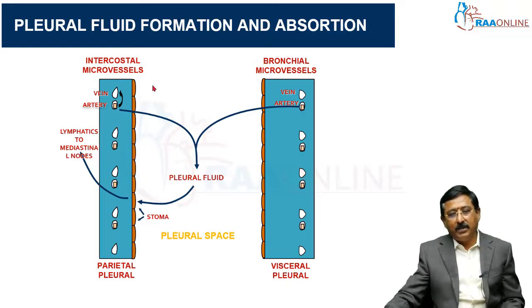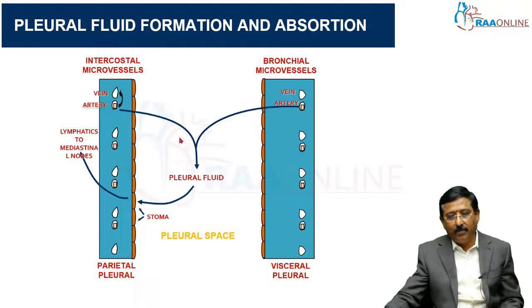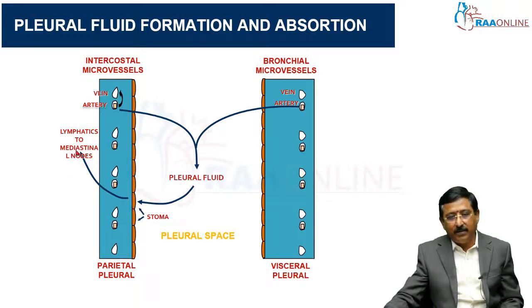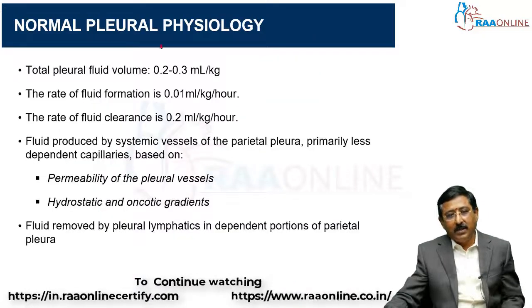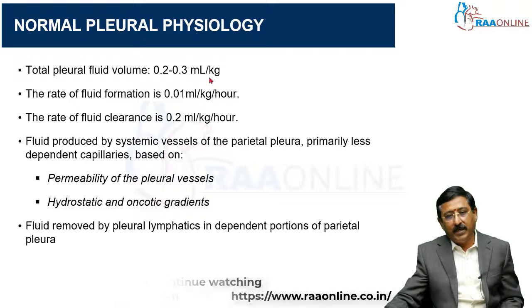Coming to pleural fluid formation: there are two pleuras — visceral and parietal. The visceral pleura secretes fluid from bronchial microvessels, while the parietal pleura forms pleural fluid from intercostal microvessels. Pleural fluid is absorbed by lymphatics from the mediastinal nodes. Any blockage or obstruction of the lymphatics prevents absorption, increasing pleural fluid accumulation. Normal total pleural fluid volume is 0.2 to 0.3 mL per kg body weight.